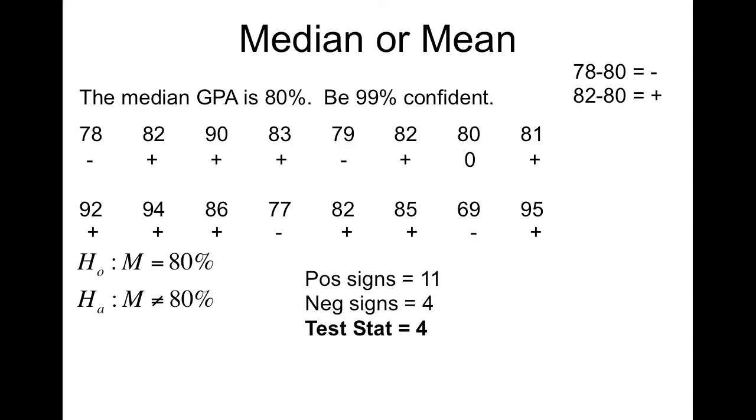Now, for the critical value, all that is the same. We have our alpha level, 0.01, since we're 99% confident. Degrees of freedom is N again, so there are 16 values up there. So our degrees of freedom is 16, and since our alternative is not equal to, we have a two-tail test. So now we're going to go to the chart.